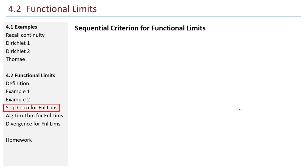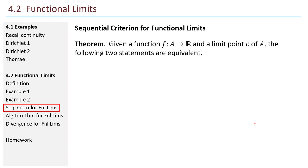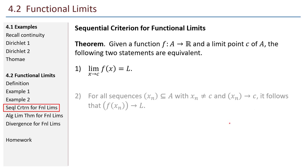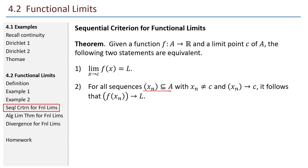The sequential criterion for functional limits is a nice alternate way of working with limits — it's a theorem equivalent to the epsilon-delta definition. Given a function f from A to the reals and a limit point c of A, the following two statements are equivalent: the limit as x goes to c of f of x equals L, if and only if, for all sequences (x_n) taken from A where the elements are not c and the sequence converges to c, it follows that the sequence of function values f(x_n) converges to L. An emphasis on the word 'all' — for all sequences.